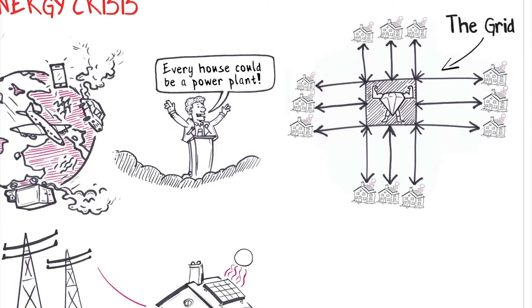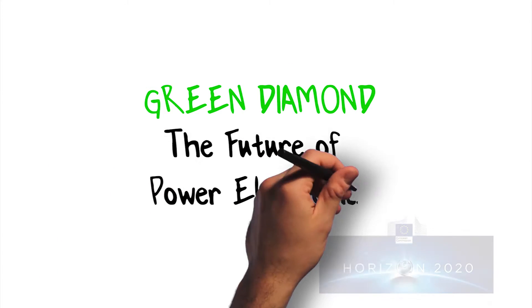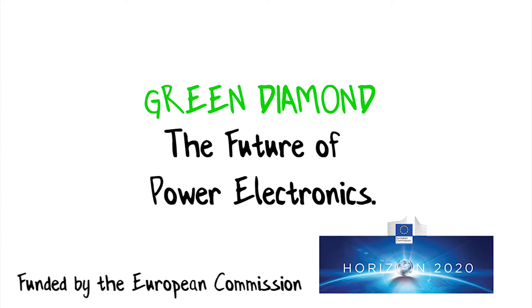To control the flow of energy, we have to build power electronics that will reduce the losses in the control flow and dissipate as little electrical energy as possible. And that's the aim of the Green Diamond project: to build new power electronics that will be much more efficient and save energy.